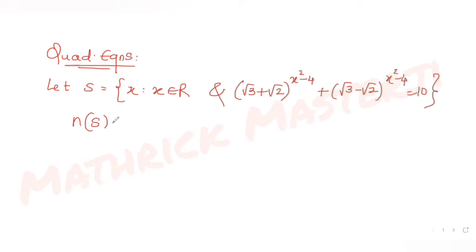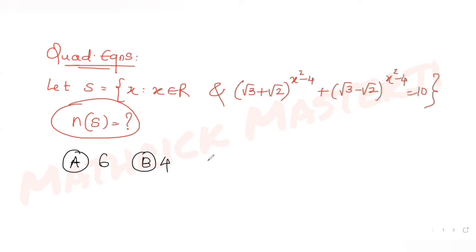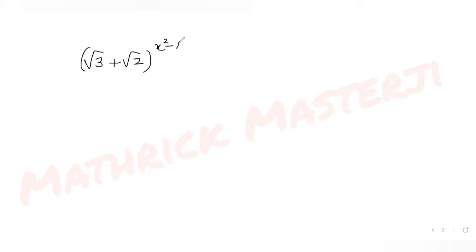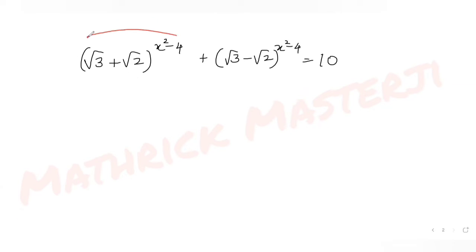We need to find how many elements are present in set S. The answer choices are 6, 4, 0, and 2. Writing the equation out: (√3 + √2)^(x²−4) + (√3 − √2)^(x²−4) = 10. Let's substitute part of this expression to simplify.